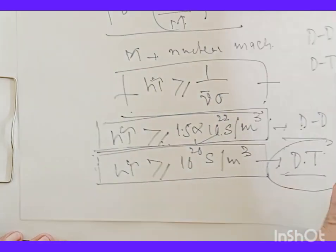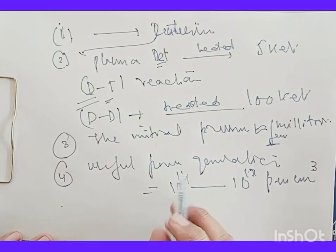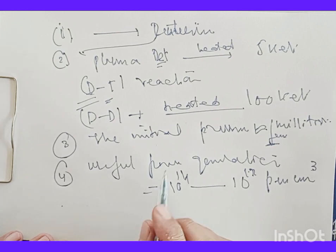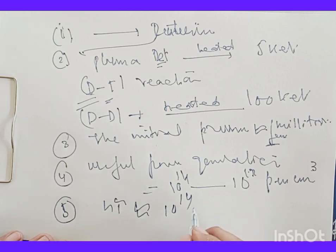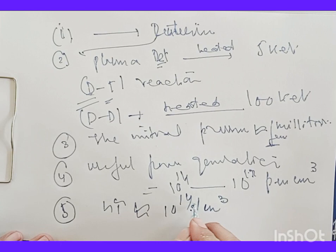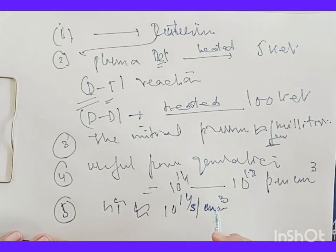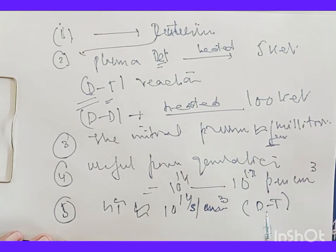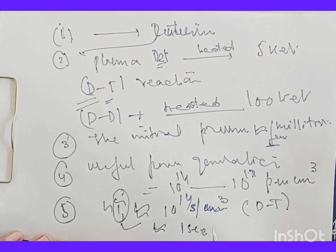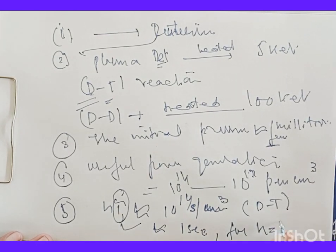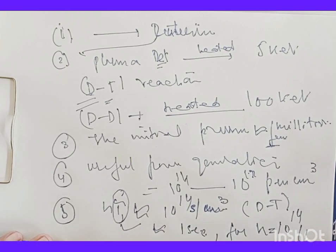The Lawson criterion is nτ ≥ 1/(v̄σ). For DD reaction the condition is given accordingly, and for DT reaction nτ should be of the order of 10¹⁴ per cm³·second, which means τ should be at least of the order of one second for n = 10¹⁴ per cm³.